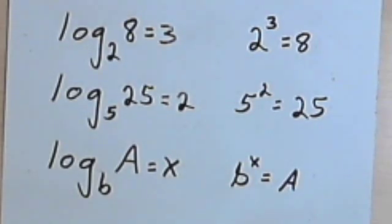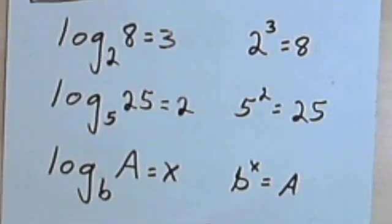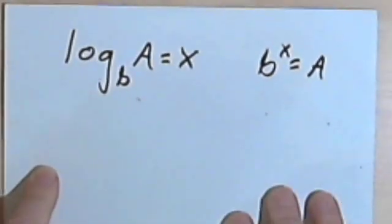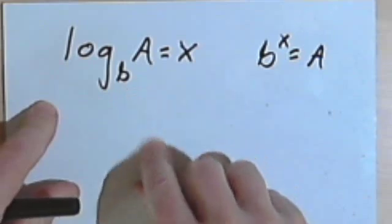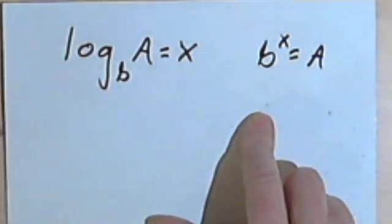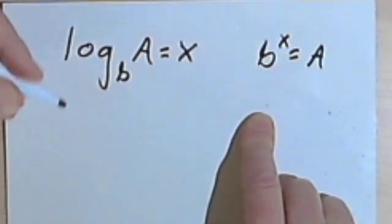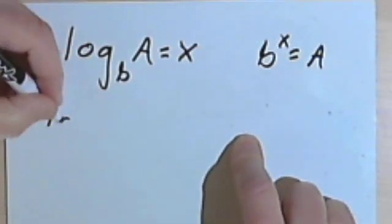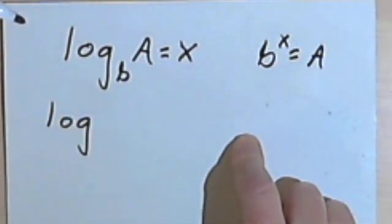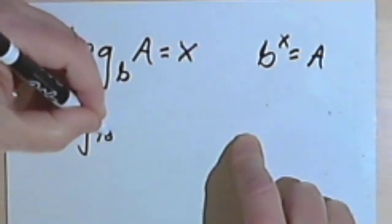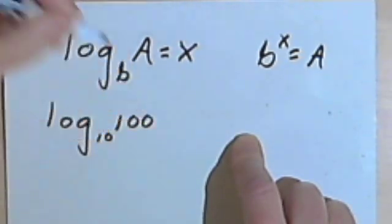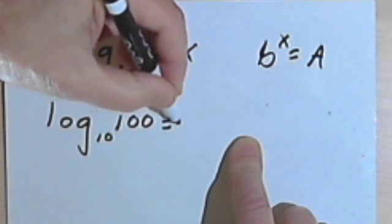So let's just do a bunch of examples converting from one form to the other to try to fix this fairly well in your minds. So here's my general formulas for the logarithmic form and the exponential form. And let's try something with, let's say, base 10. So log base 10 of 100 equals 2.